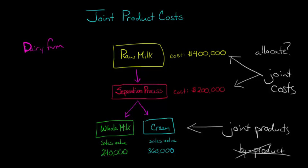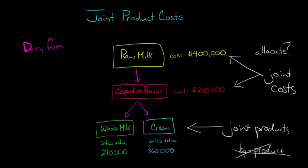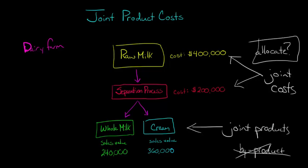The question is how do we allocate the joint costs? The cost to produce the raw milk was needed to produce either the whole milk or the cream. We can't easily separate out how much of that cost was attributable to the cream versus the whole milk, because we needed it to get both products. That's why we call it a joint cost, and we need some way to allocate it. One way is to allocate it based on the relative sales value of the products.